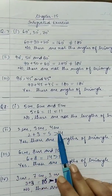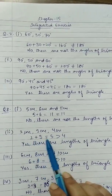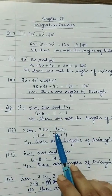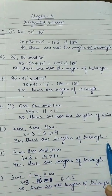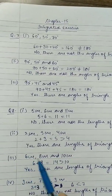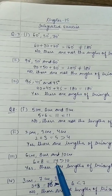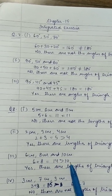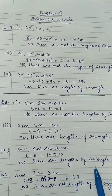Second part: 2, 3, and 4 — 2 plus 3 equals 5, which is greater than 4. So yes, these are the lengths of a triangle. Third part: 6, 8, and 10 — 6 plus 8 equals 14, which is greater than 10. So yes, these are valid lengths of a triangle.